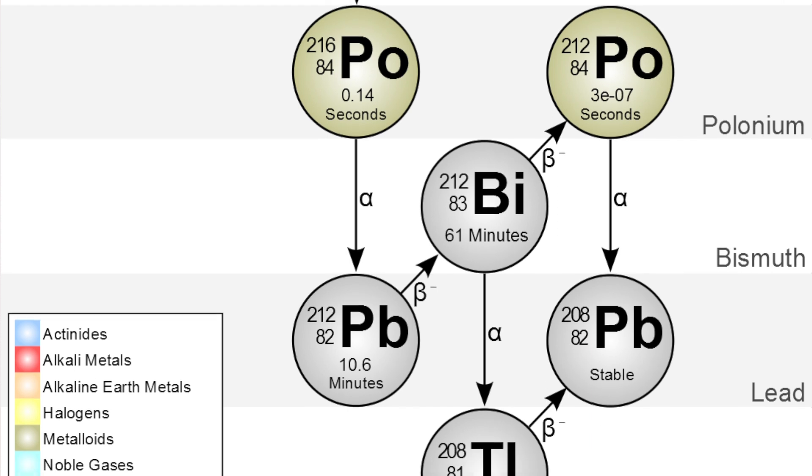As it decays, it emits various types of ionizing radiation such as alpha particles, beta particles, and gamma rays.